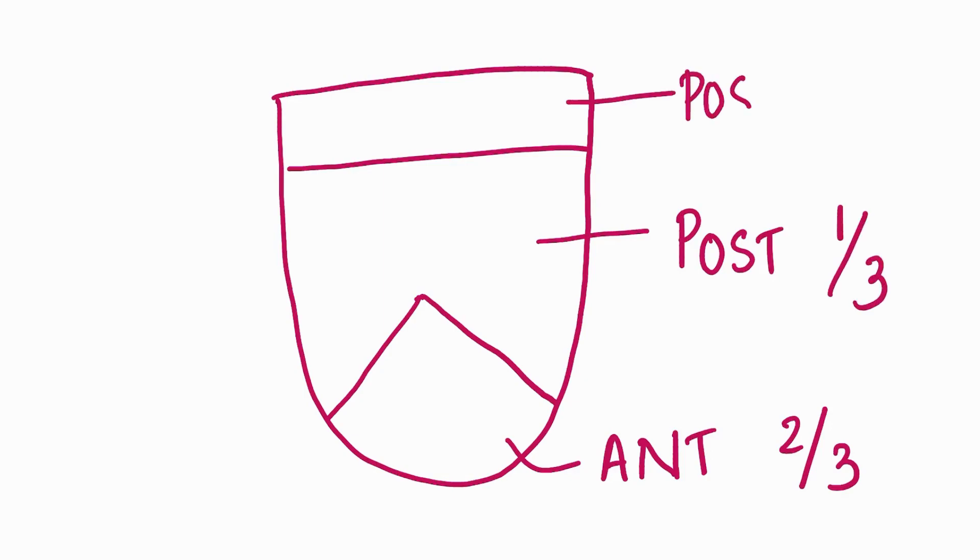Let's draw the tongue and divide it into three parts: anterior two-third, posterior one-third, and the posterior most part.